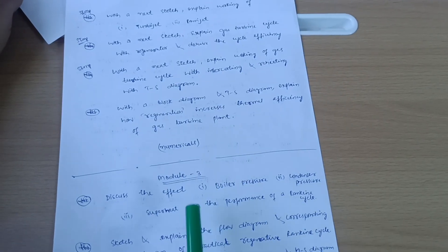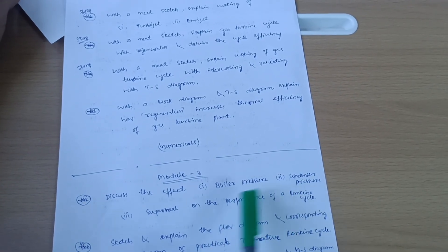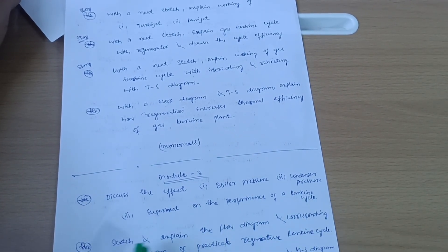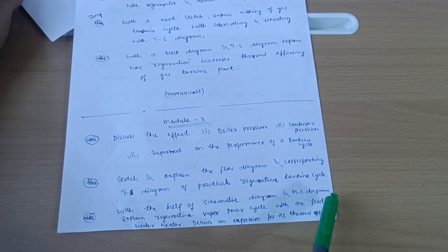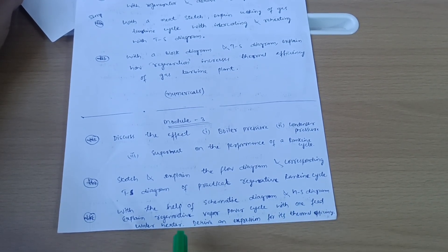Next is Module 3. Discuss the effect of boiler pressure, condenser pressure, and superheat on the performance of a Rankine cycle. Sketch and explain the flow diagram and corresponding TS diagram of practical regenerative Rankine cycle. With the help of systematic diagram and HS diagram, explain regenerative vapor power cycle with one feed water heater. Derive an expression for its thermal efficiency.